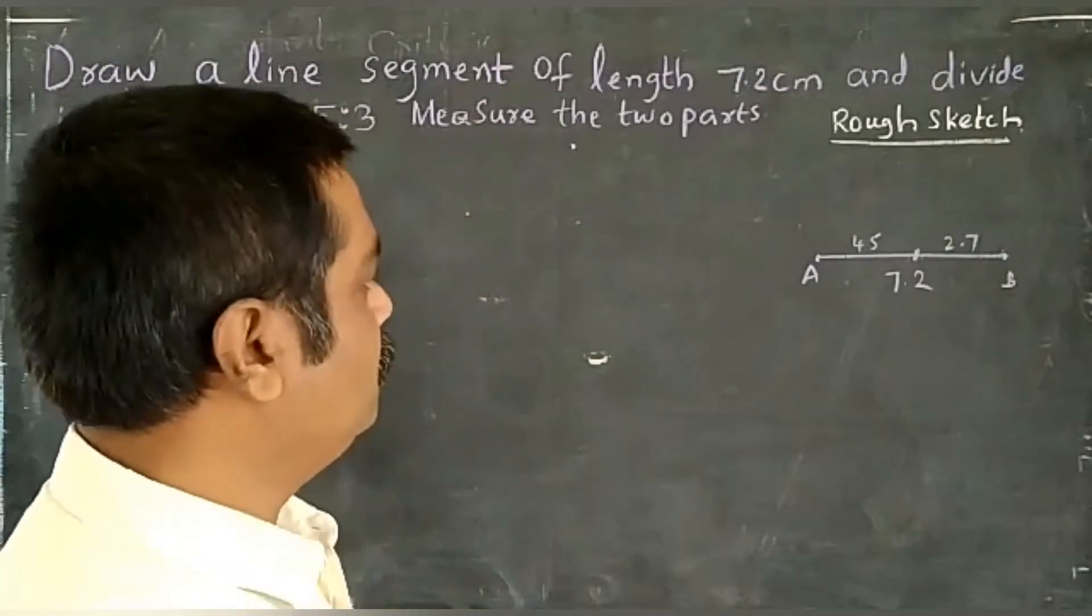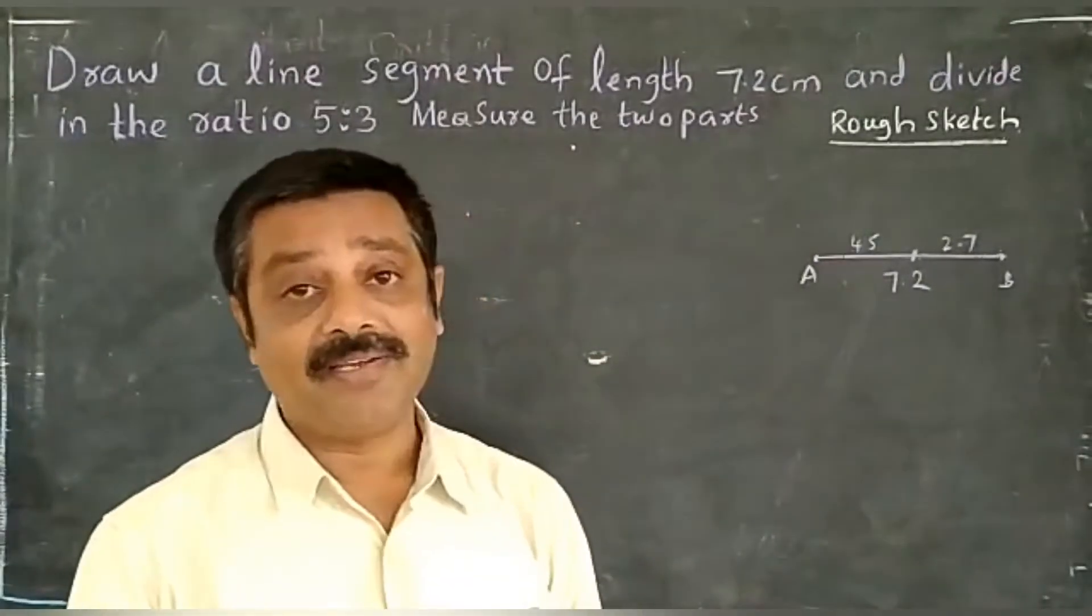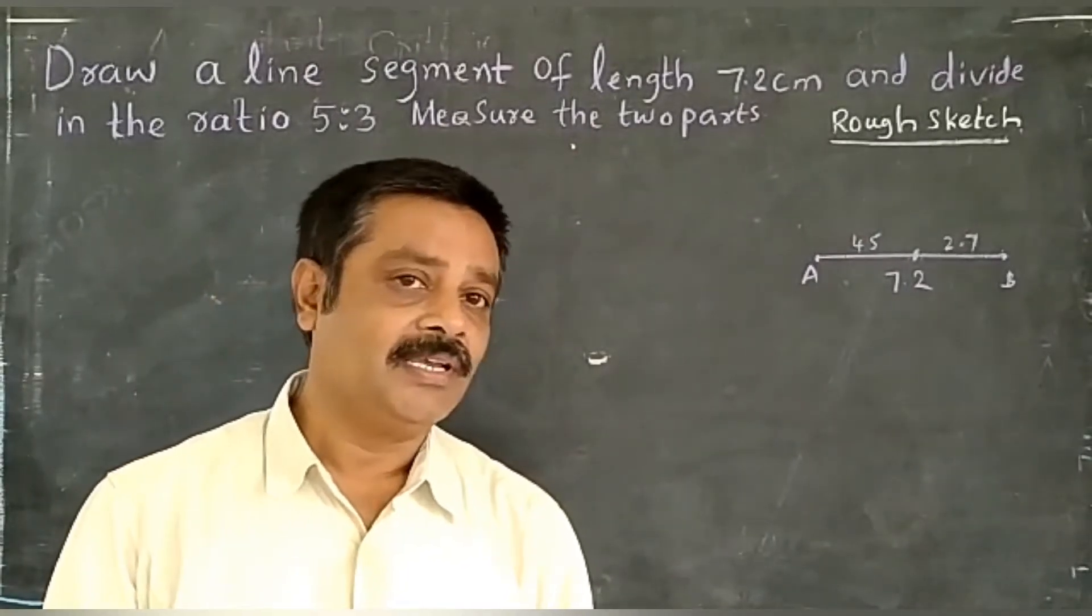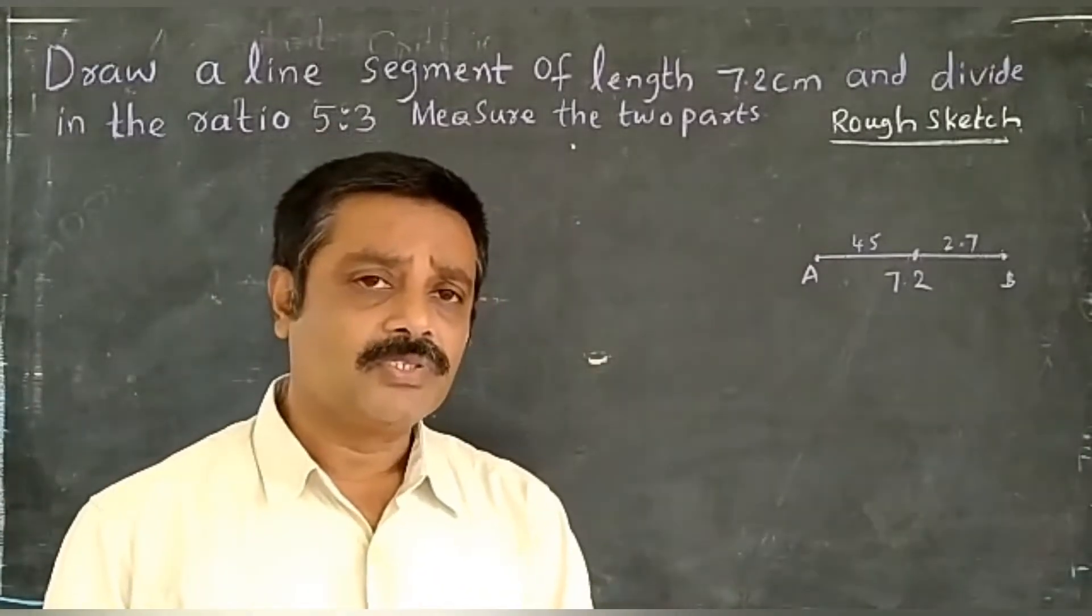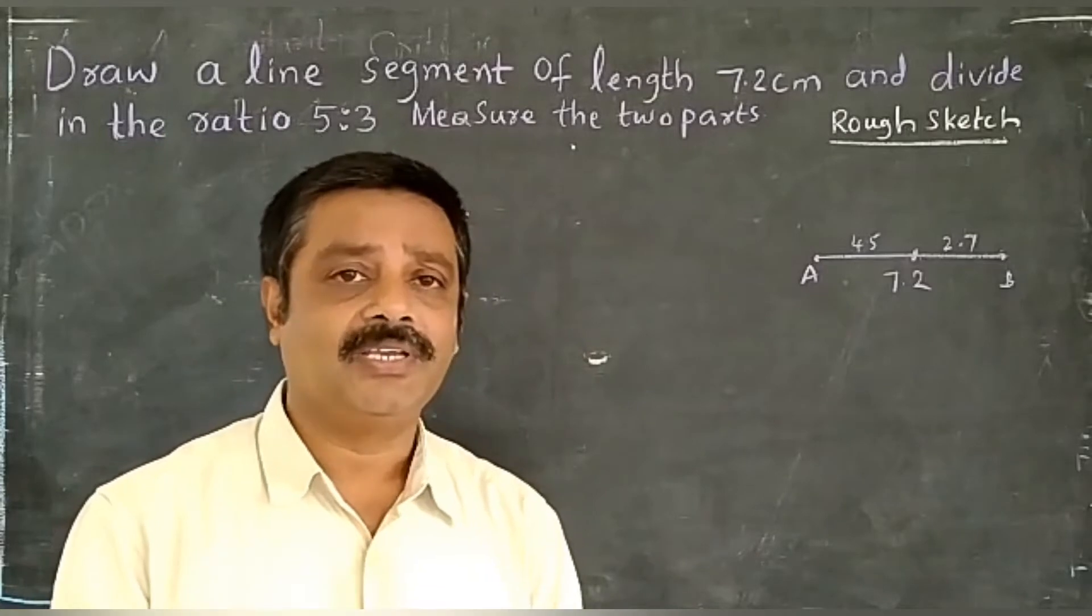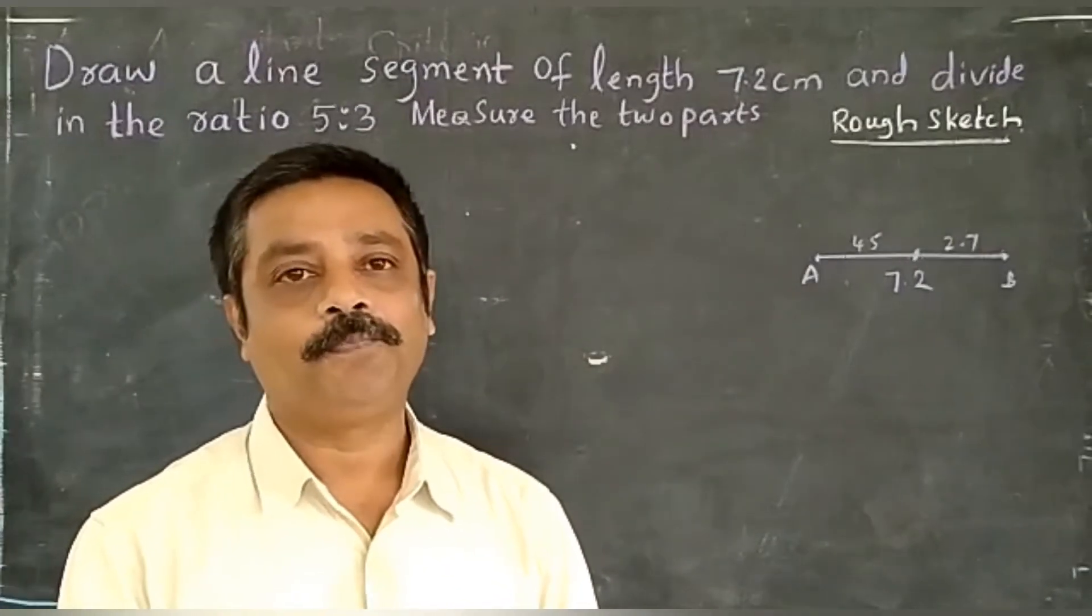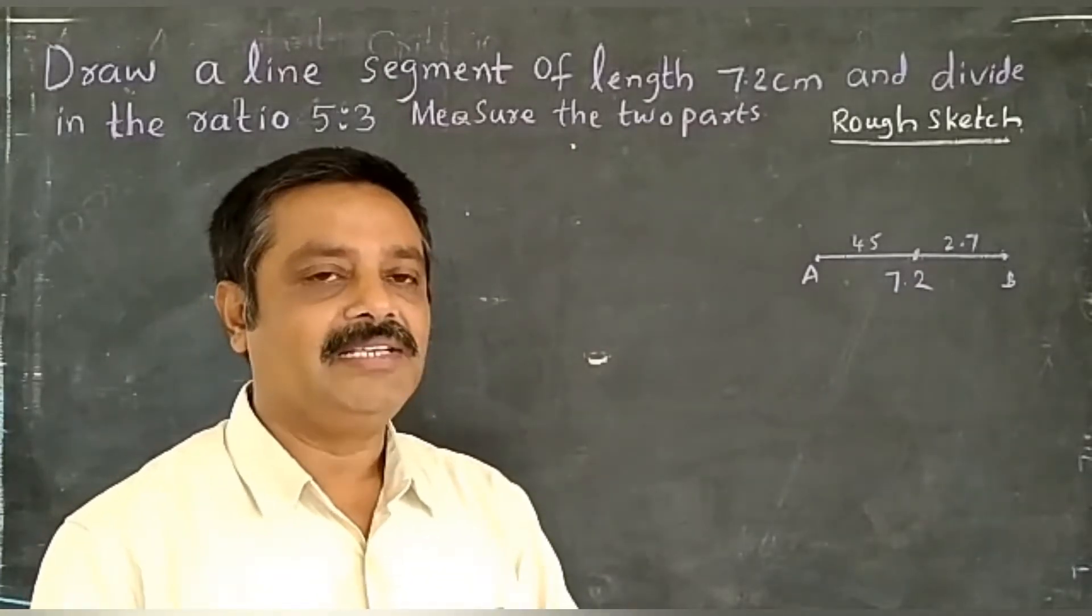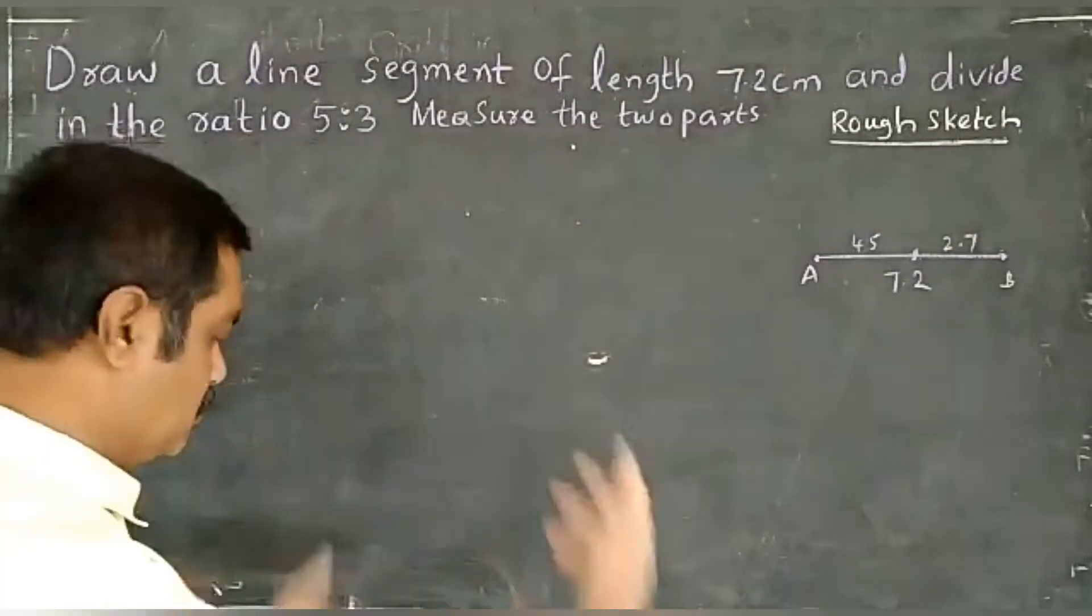That's enough, but 7.2 is exactly divisible by 8, so there's no problem. In some cases it's not exactly divisible by 8, and you'll get problems with micro parts. But if you take the help of Basic Proportionality Theorem, you'll get exactly perfect results.